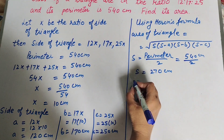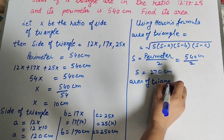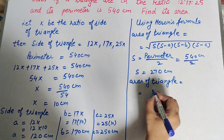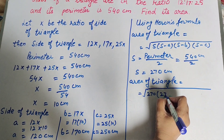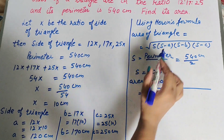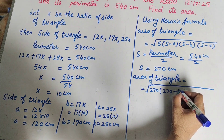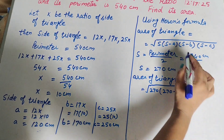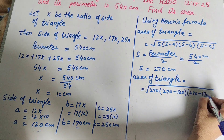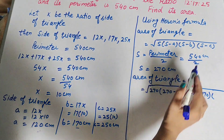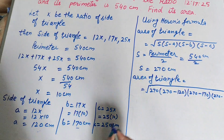Now we find the area of the triangle. Area equals square root of S(S minus A)(S minus B)(S minus C). S is 270 centimeters. S minus A equals 270 minus 120 equals 150. S minus B equals 270 minus 170 equals 100. S minus C equals 270 minus 250 equals 20.